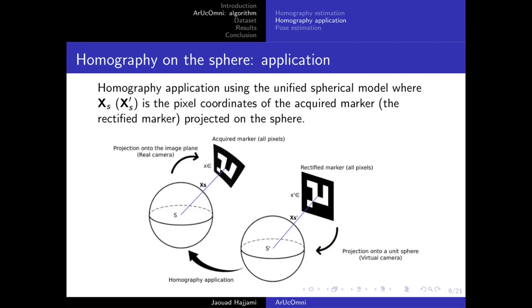Now we're going to use the estimated homography and apply it to the rectified marker to extract pixel intensities from the acquired marker. The same principle as before, but this time we project all the pixels of the rectified marker using the virtual camera onto the sphere, then apply the homography, and then project the resulting coordinates into the image plane of the acquired marker.